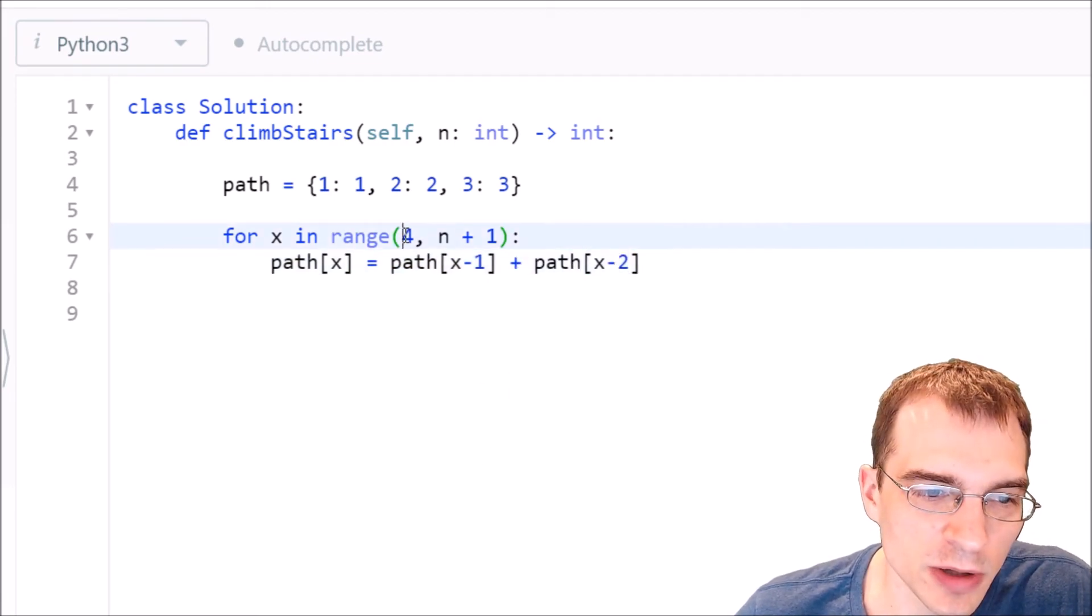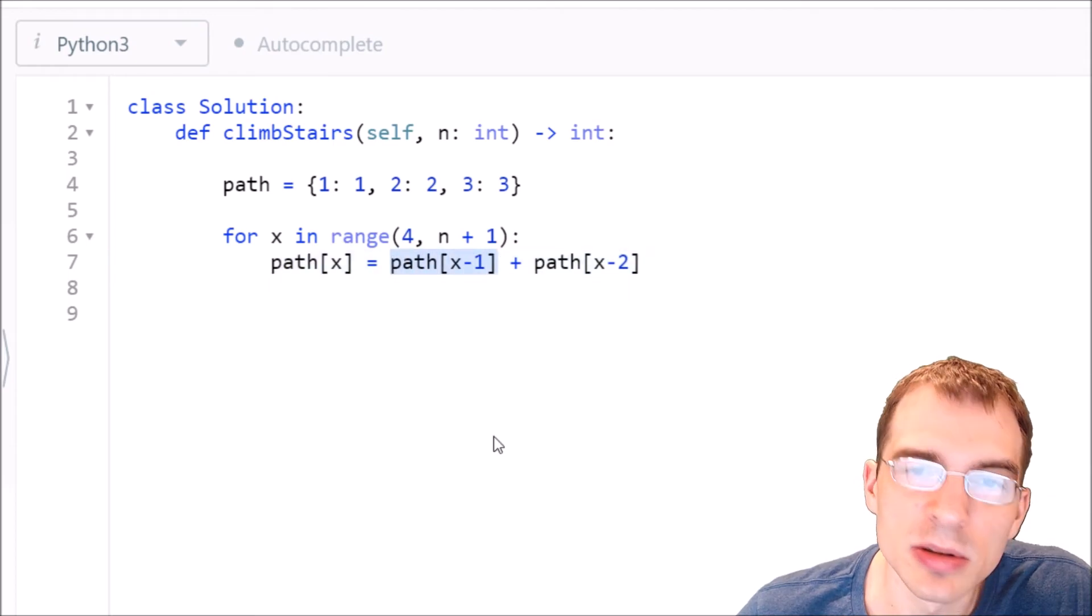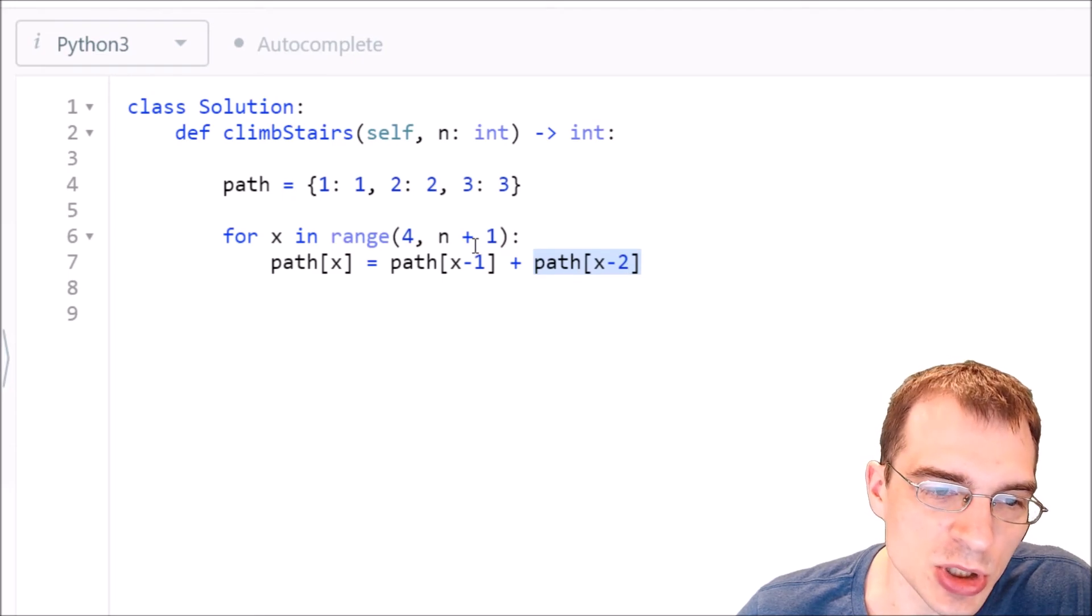So for the case of a four stair staircase here, this is saying how many ways are there to get to that? Well, we saw before that it's the number of ways to get to three plus the number of ways to get to two, because those are the only two positions that you can directly get to four from.